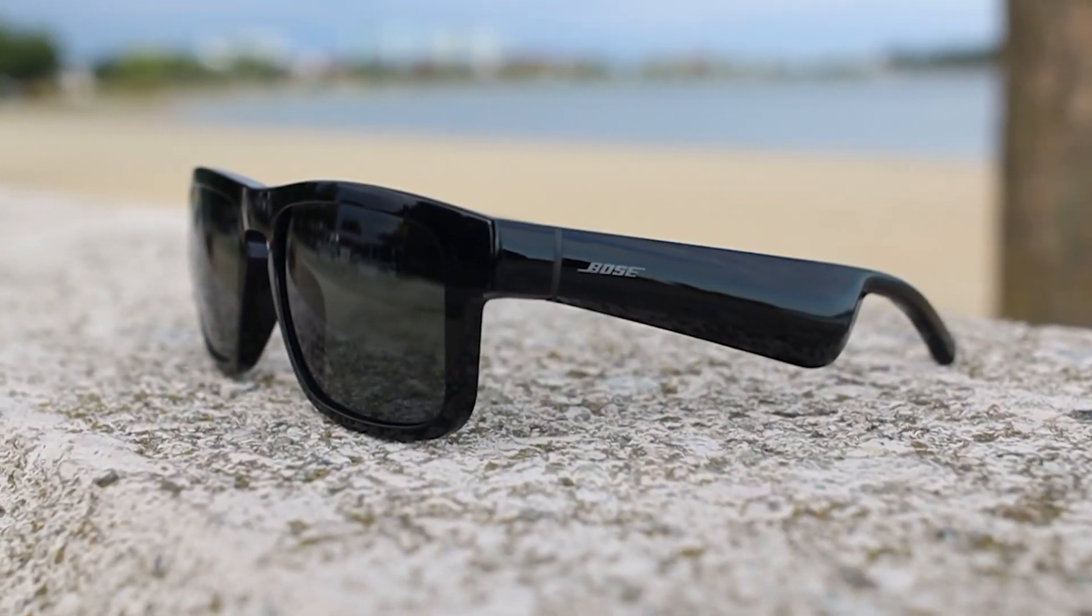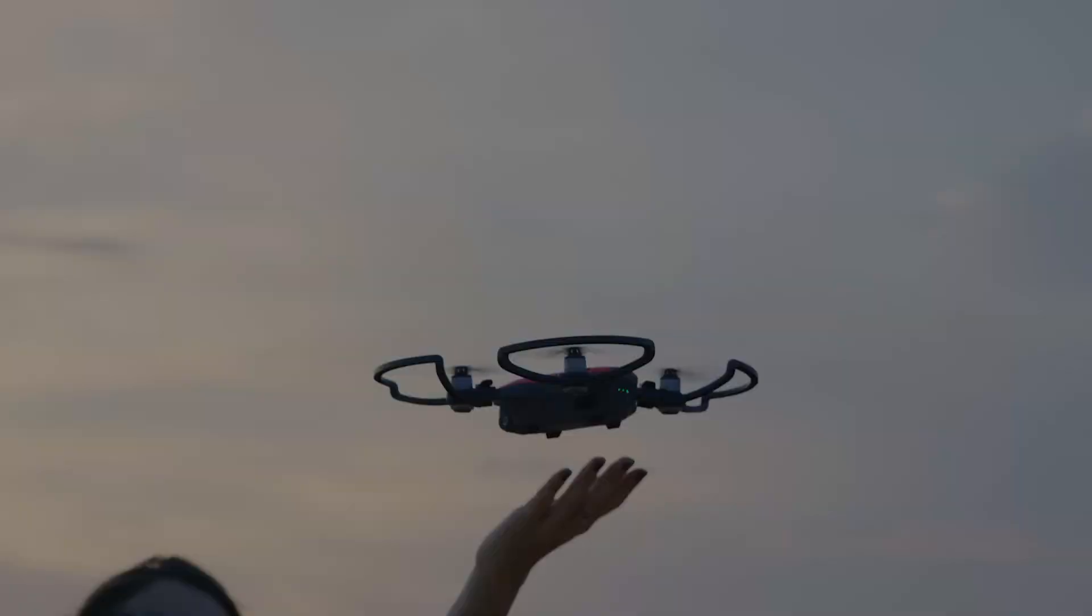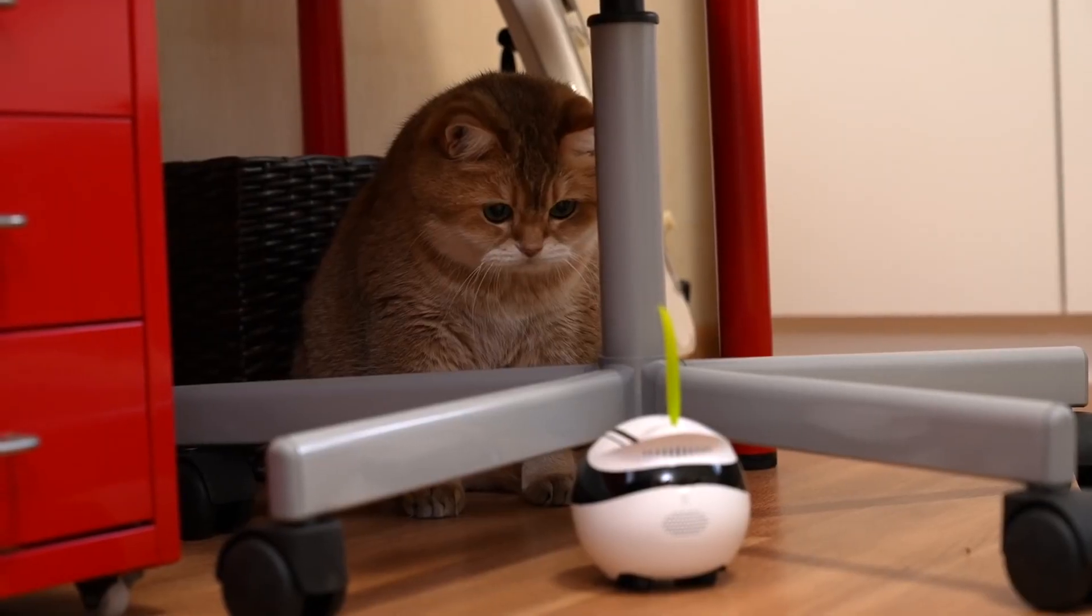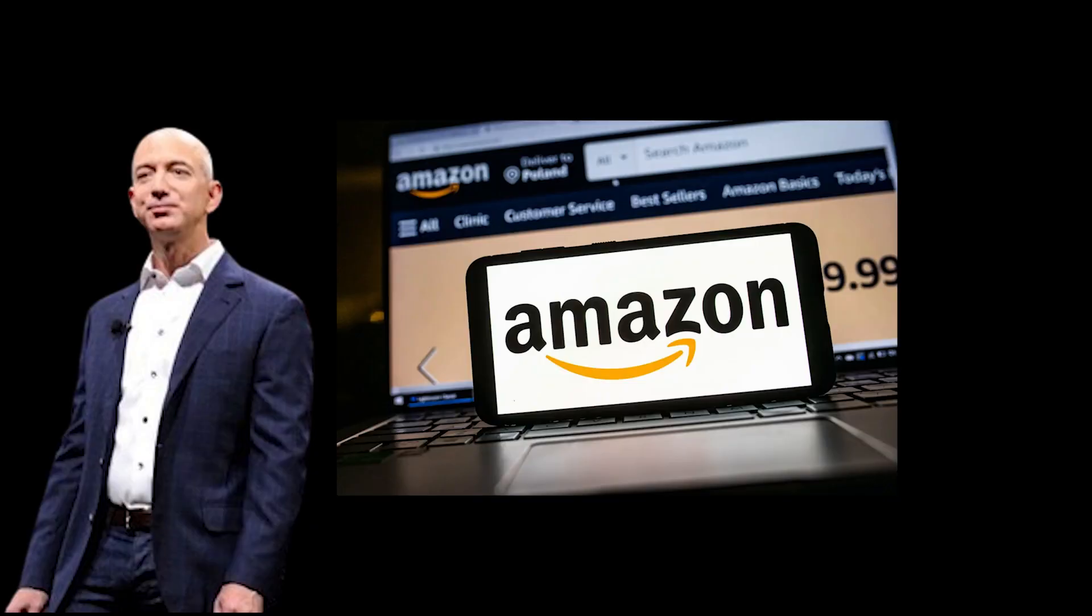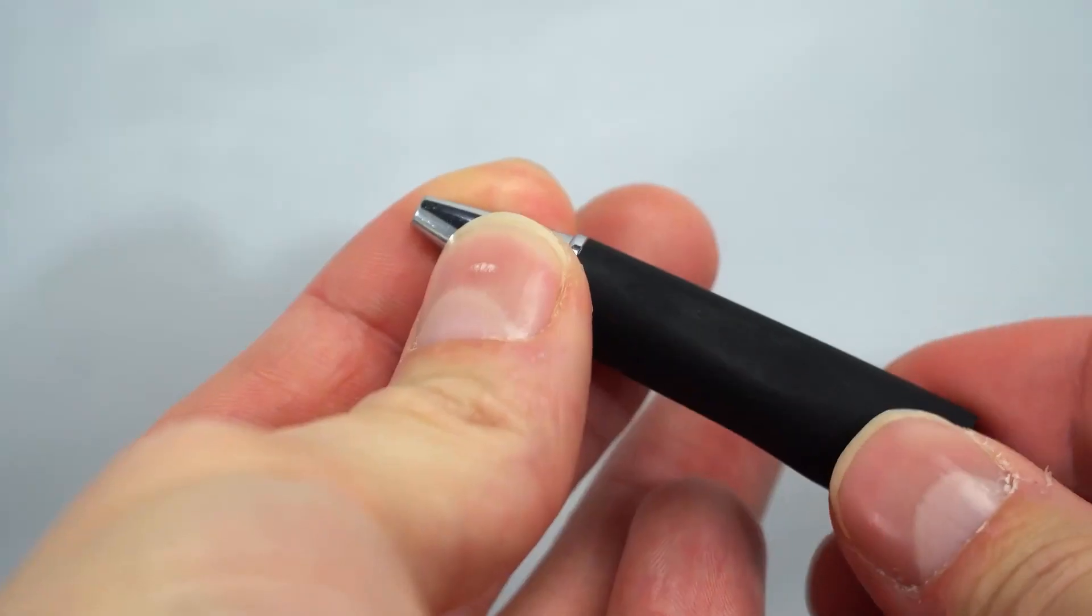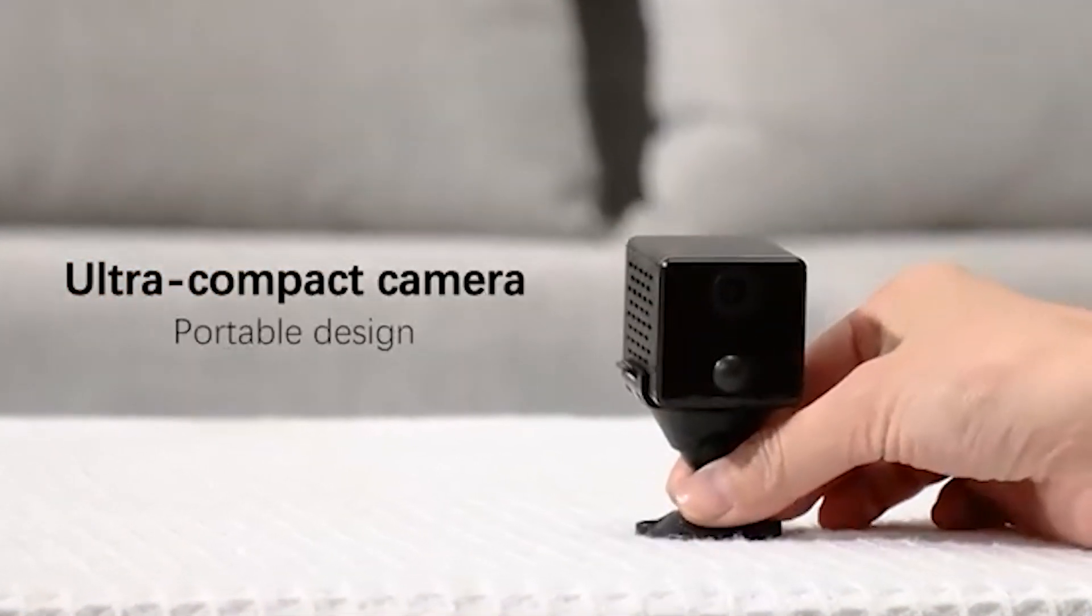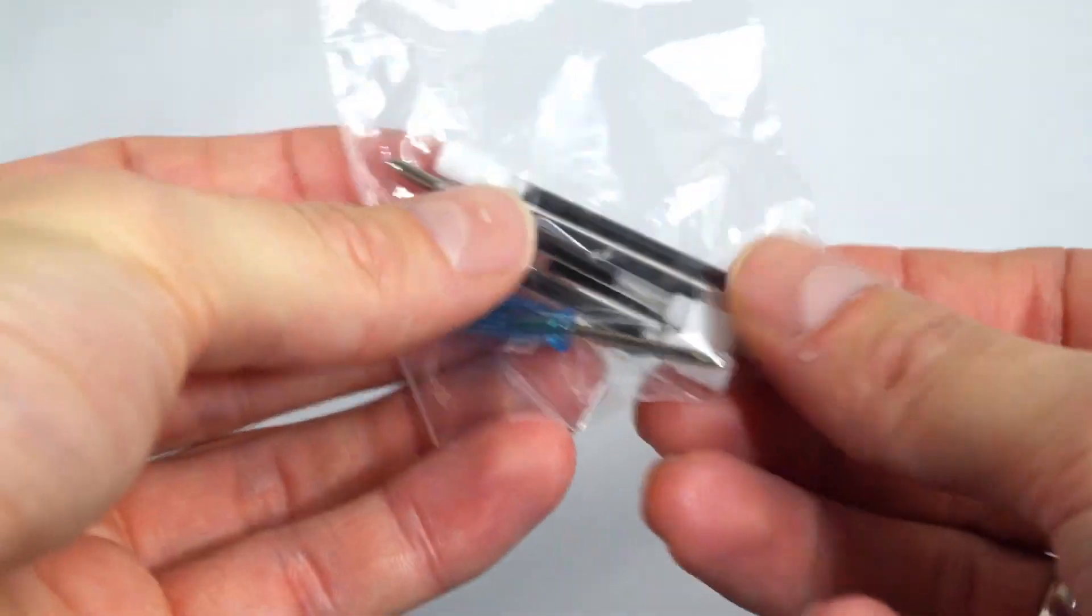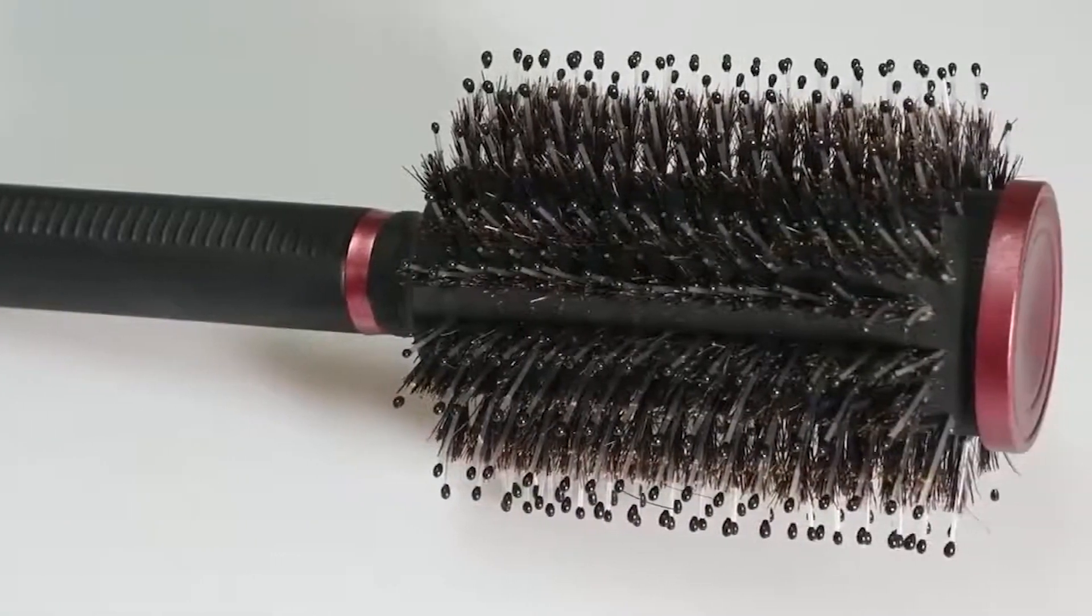If you've ever wondered how to keep tabs discreetly or secure your belongings without anyone being the wiser, you're in for a treat. We're showcasing 10 of the most affordable and clever spy gadgets available on Amazon that promise not just intrigue, but practicality. Whether you're a professional in security or just love cool tech, these gadgets are sure to impress. Let's uncover the secrets of each device.